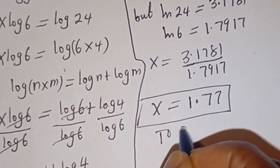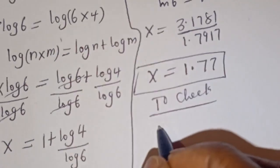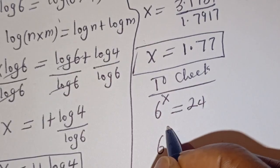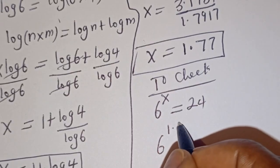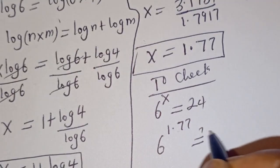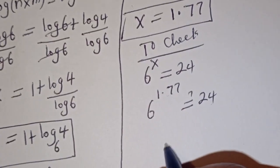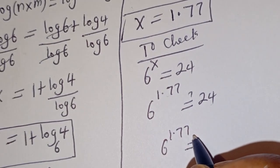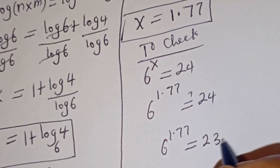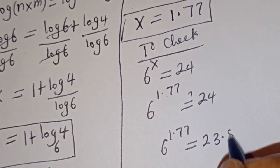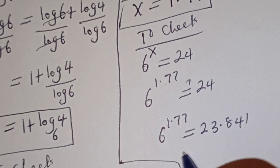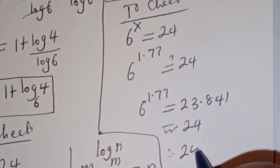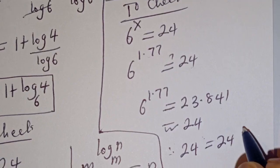We can check to confirm if this answer is right or wrong. To check, we have the given equation 6 to the power of x is equal to 24. We have 6 to the power of 1.77 must equal 24, and this is equal to 23.841, which is approximately equal to 24. Therefore, the left-hand side 24 is equal to the right-hand side 24, which is true.